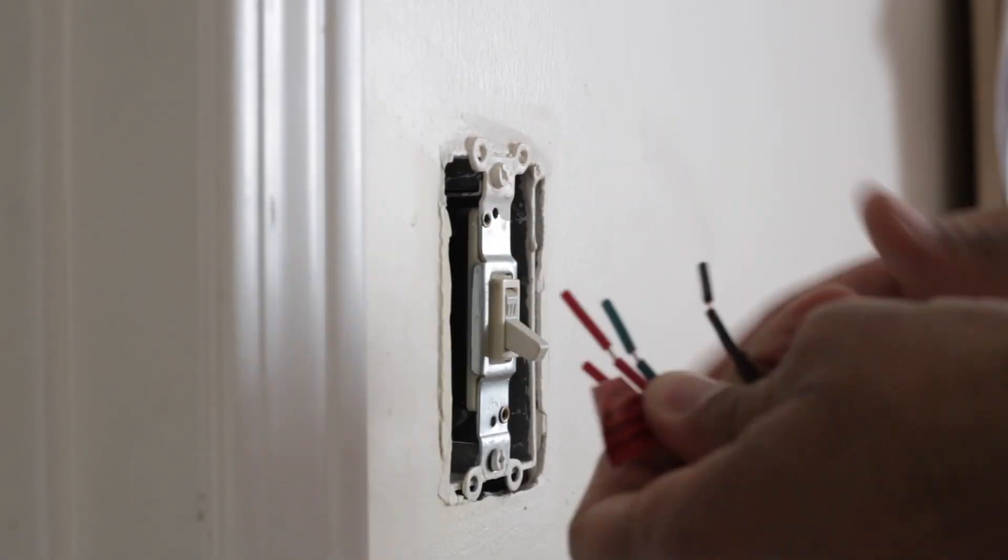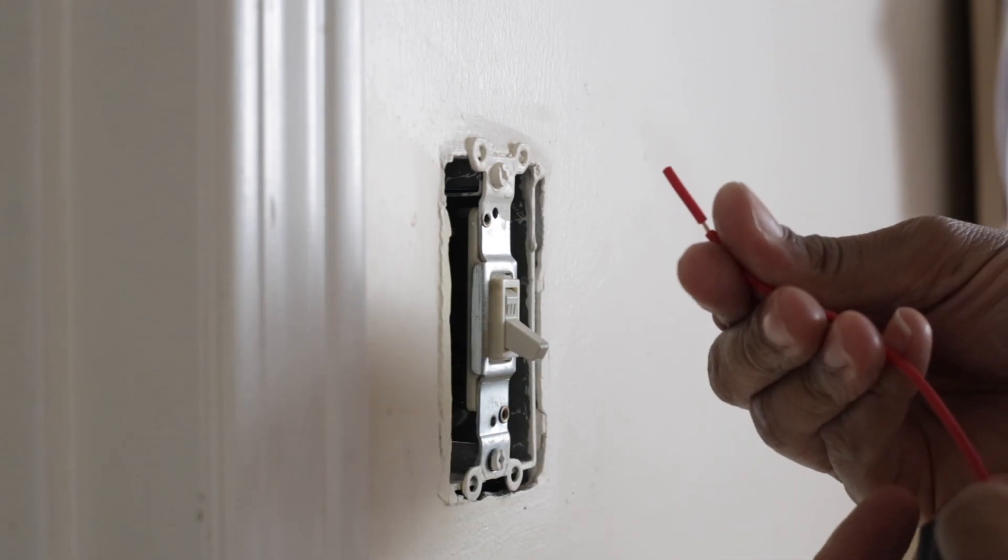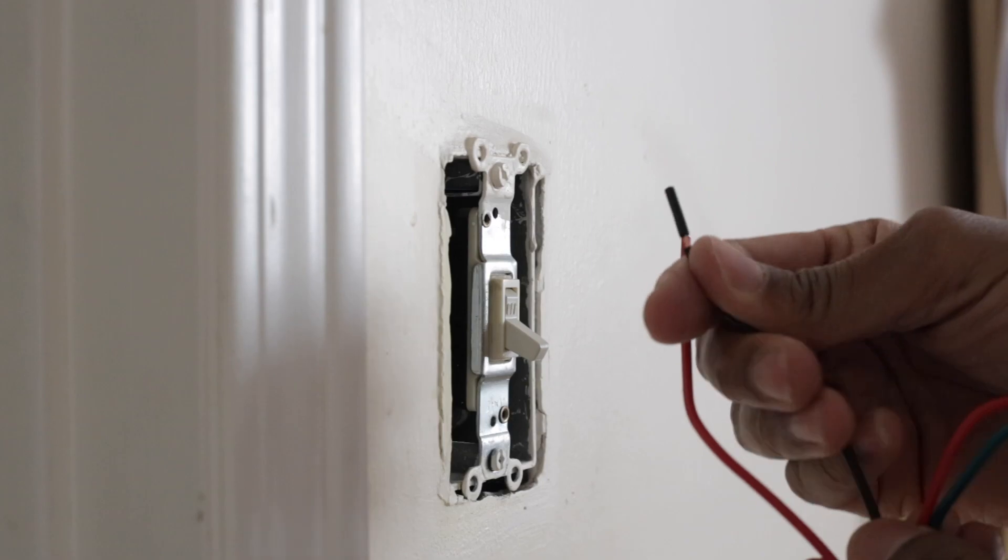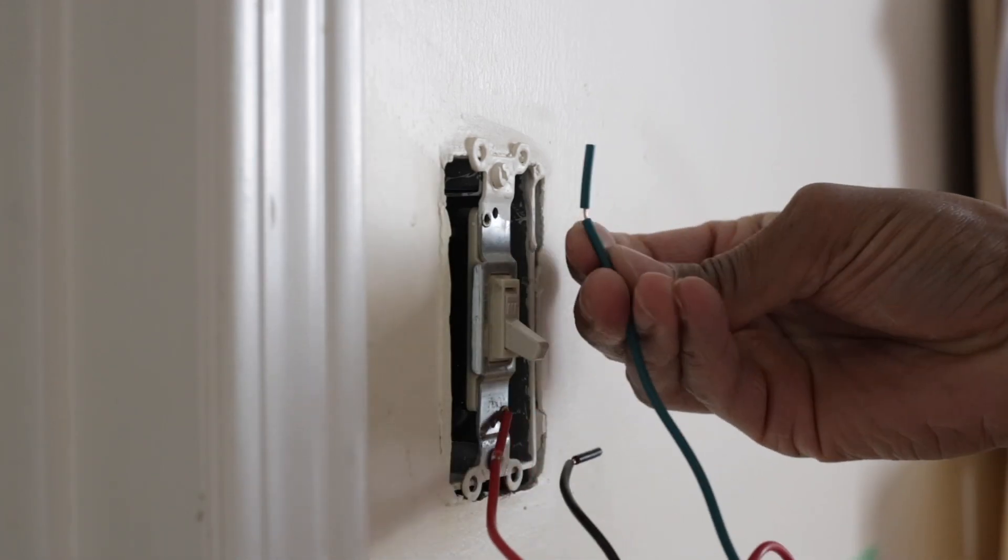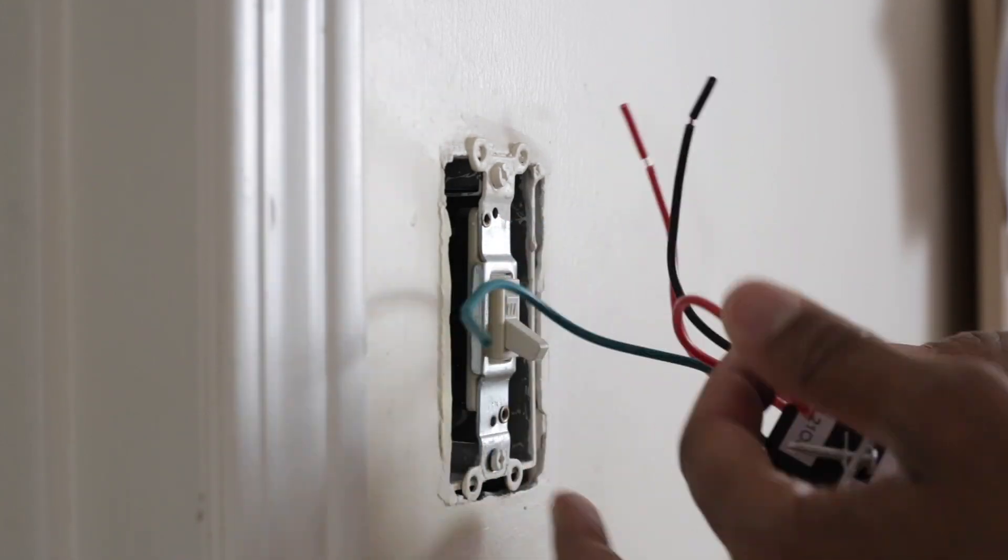Fresh out of the package, let's look at these wires. This first red one here, that one's gonna go to our load. The black one here, that's the hot one. This green one is gonna be wired up to our ground. And this last one here, this one is for three-way switch applications which we're not using here, so we can disregard that.